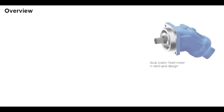Bent-axis axial piston motors come as fixed and variable motors. A typical example of a fixed motor is the Rexroth A2FM or A2FE hydraulic motor. It is used in open-circuit and closed-circuit hydrostatic drives, and in mobile and stationary applications. In mobile hydraulics, it is primarily used in construction machinery, such as mini and midi excavators, skid steer loaders, and wheeled loaders.